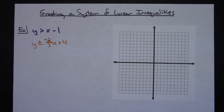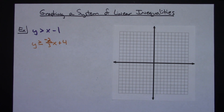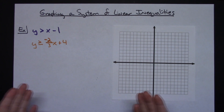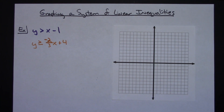In this video I'm going to be demonstrating how to graph a system of linear inequalities. I'm assuming that you know how to graph lines in slope-intercept form or standard form and have graphed inequalities by themselves before. This is basically to show you a system of linear inequalities — I've got two equations here.